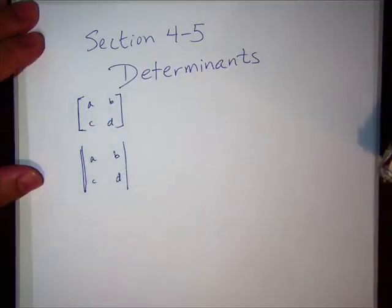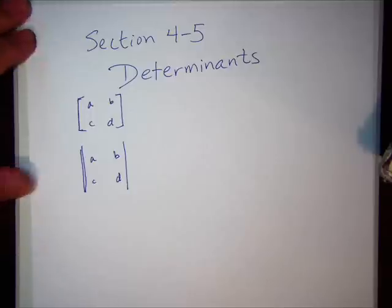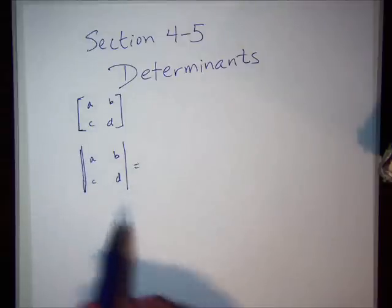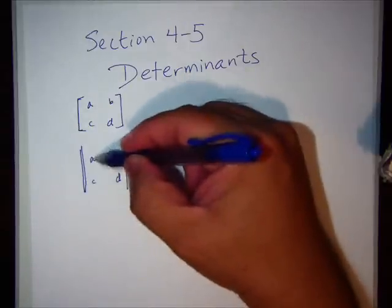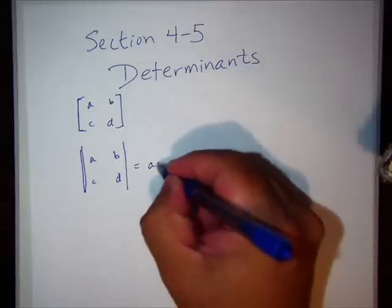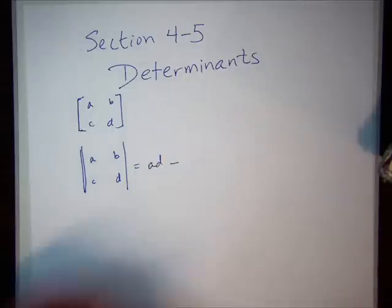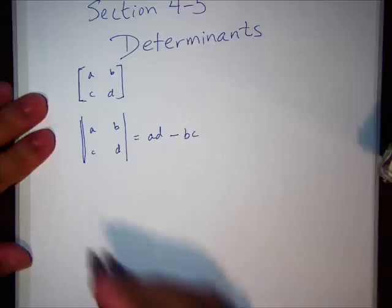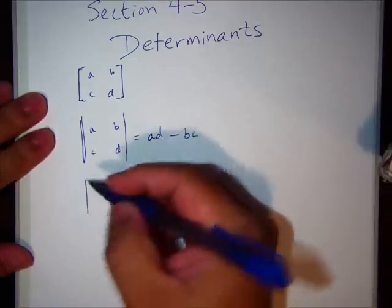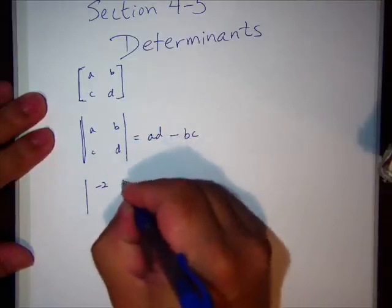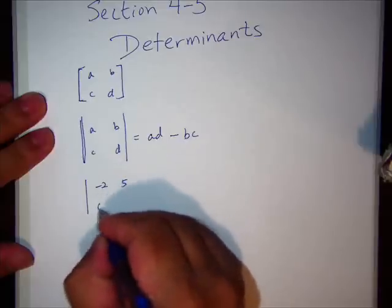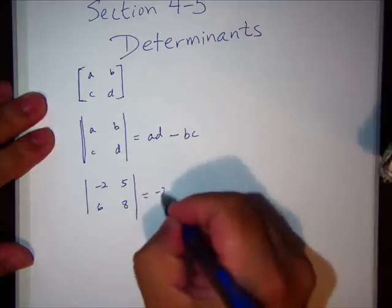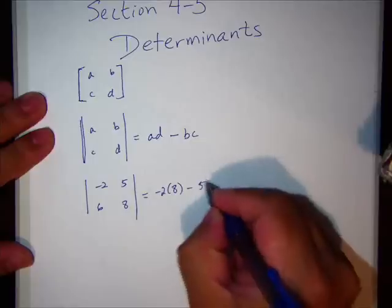The way we find the determinant for a 2 by 2 is pretty straightforward. We multiply diagonally, subtract the other diagonal. So in my first example, easy enough, negative 2 times 8 minus 5 times 6. Negative 16 minus 40, negative 56. That's the determinant.